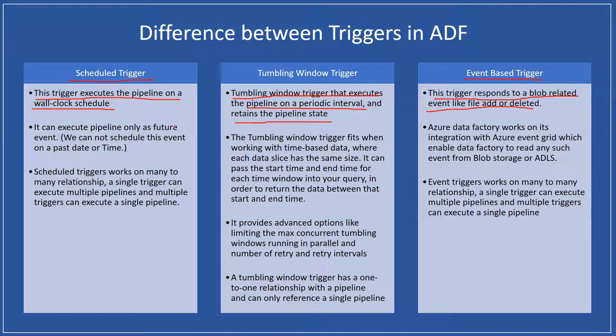This is a primary difference. Now for the second point: schedule triggers execute a pipeline only as a future event. Just as we set an alarm only for future time — we cannot schedule an alarm for a night that has already passed — similarly, this schedule trigger works only for future time.